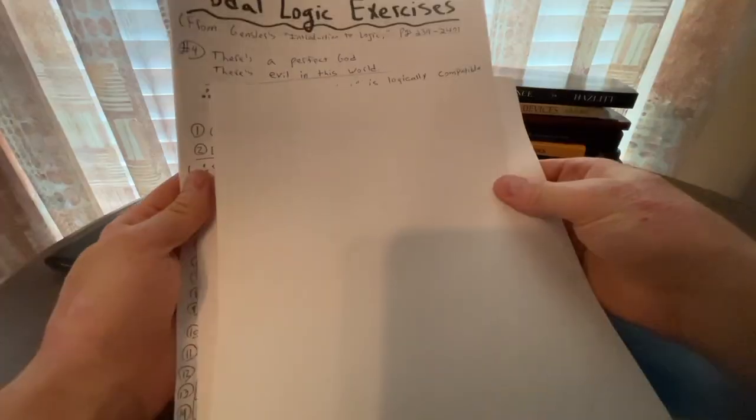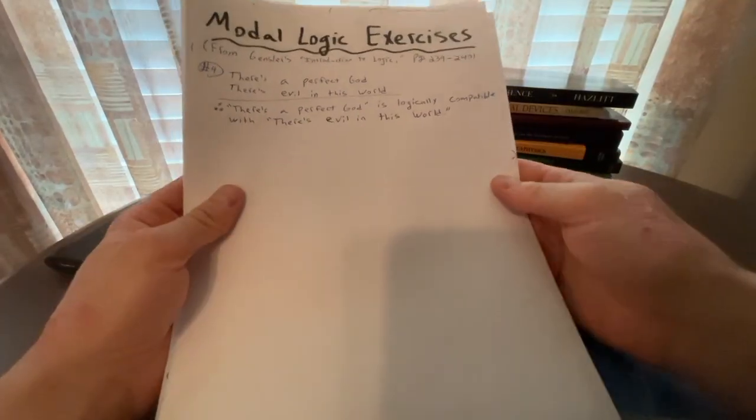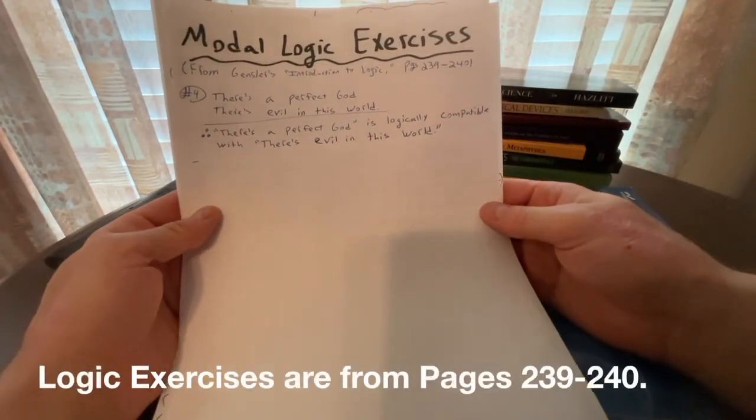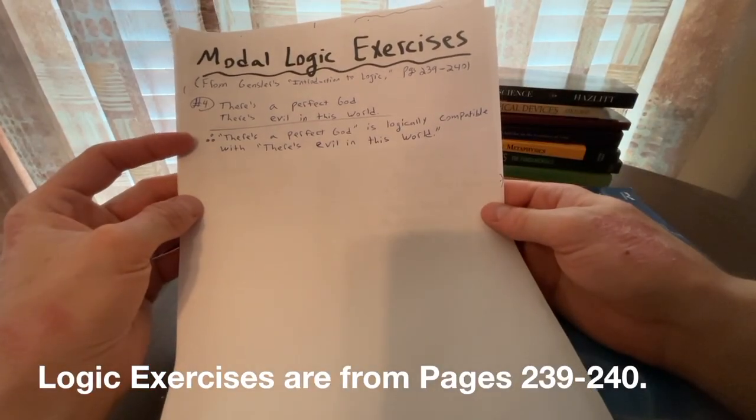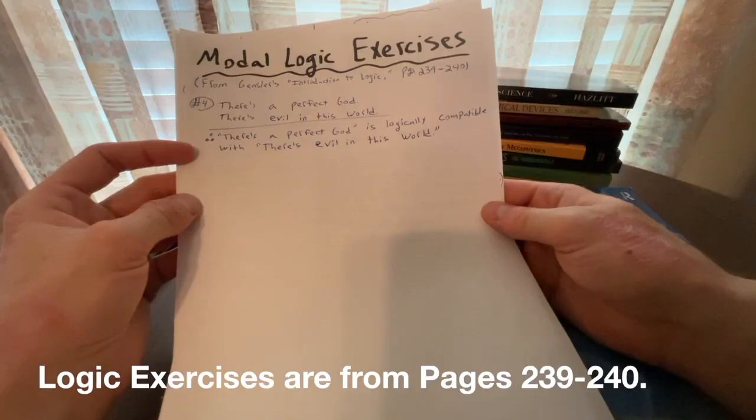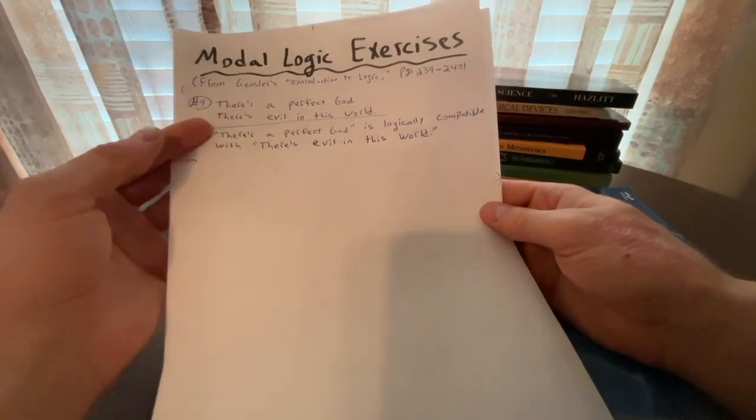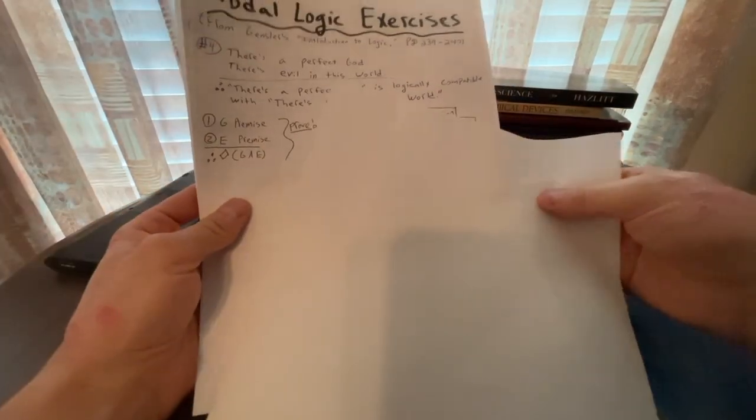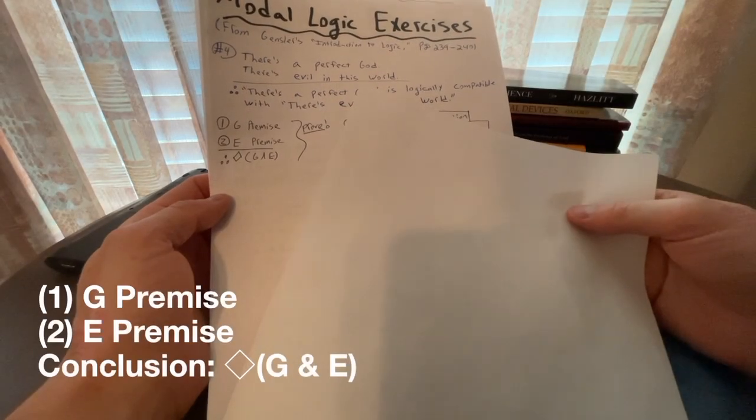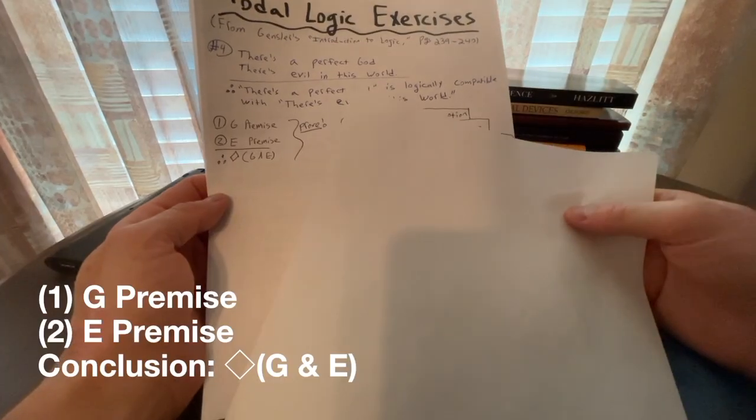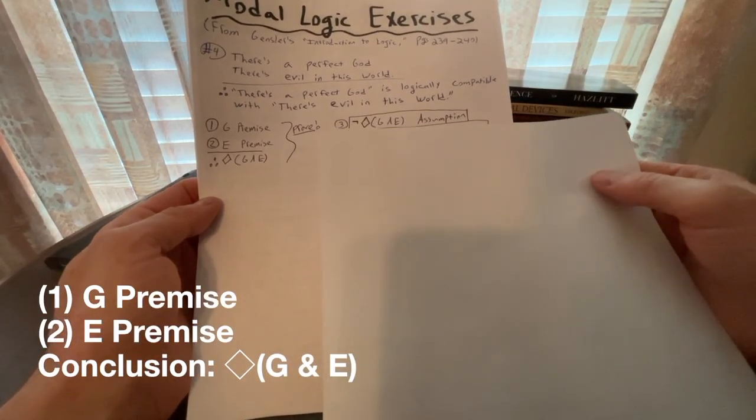So now we're going to be jumping into some arguments, a couple of arguments from Gensler's textbook. My advice is if you are comfortable with some propositional logic and modal logic, pause the video and try these yourself. Think about the argument, symbolize them into propositional and modal logic and derive the proof step by step. Number four: there's a perfect God. There's evil in this world. Therefore, there's a perfect God is logically compatible with there's evil in this world. Premise G, there is a perfect God. Premise E, there's evil in this world. Conclusion, it's necessary both G and E.